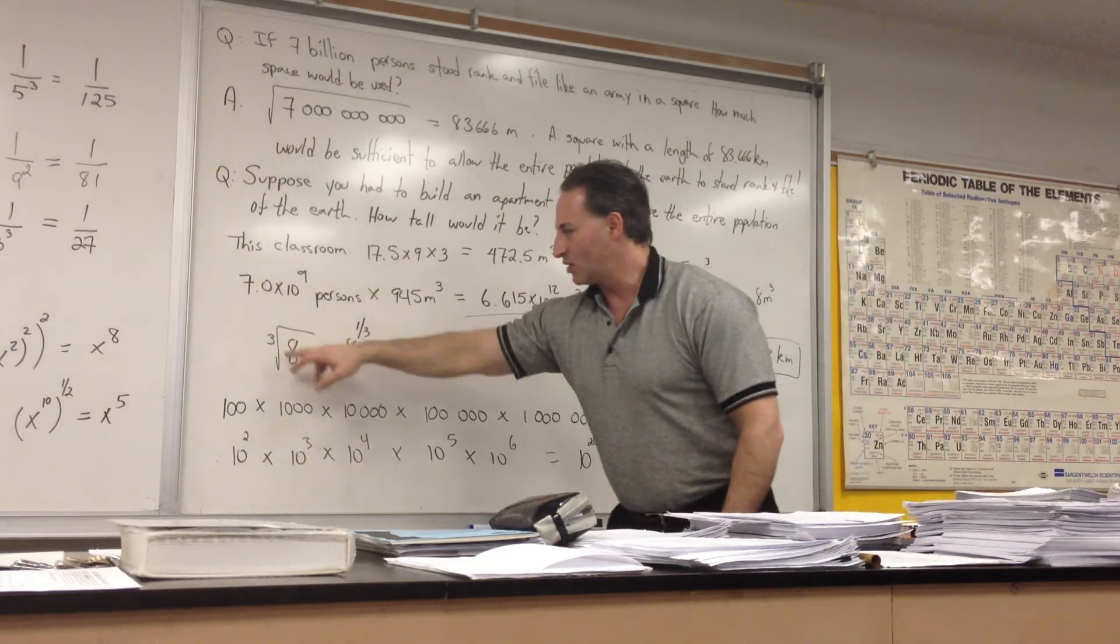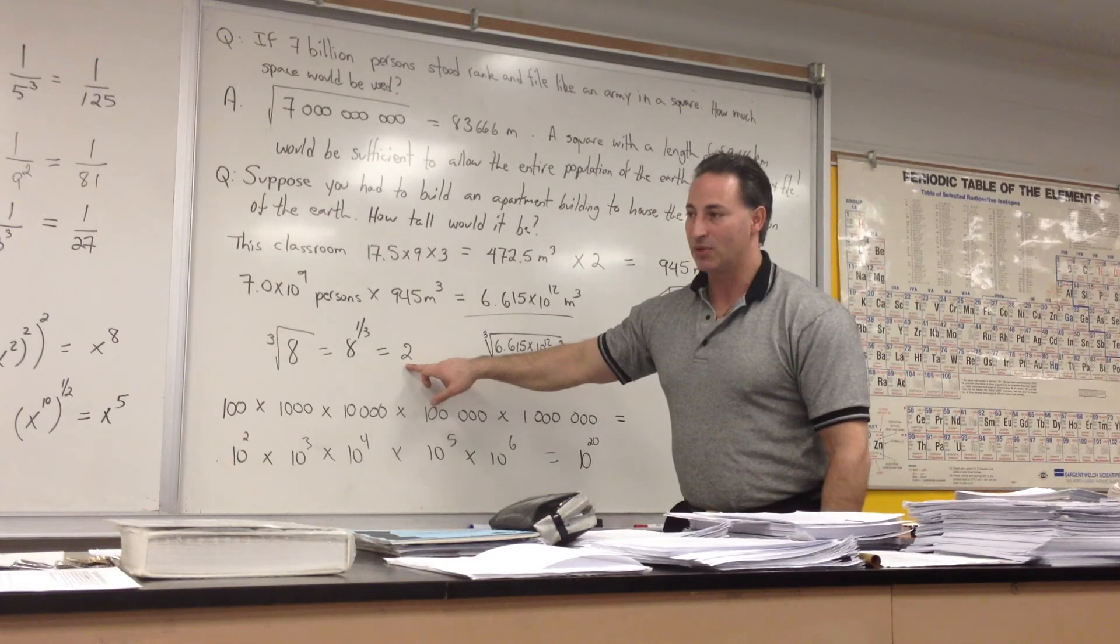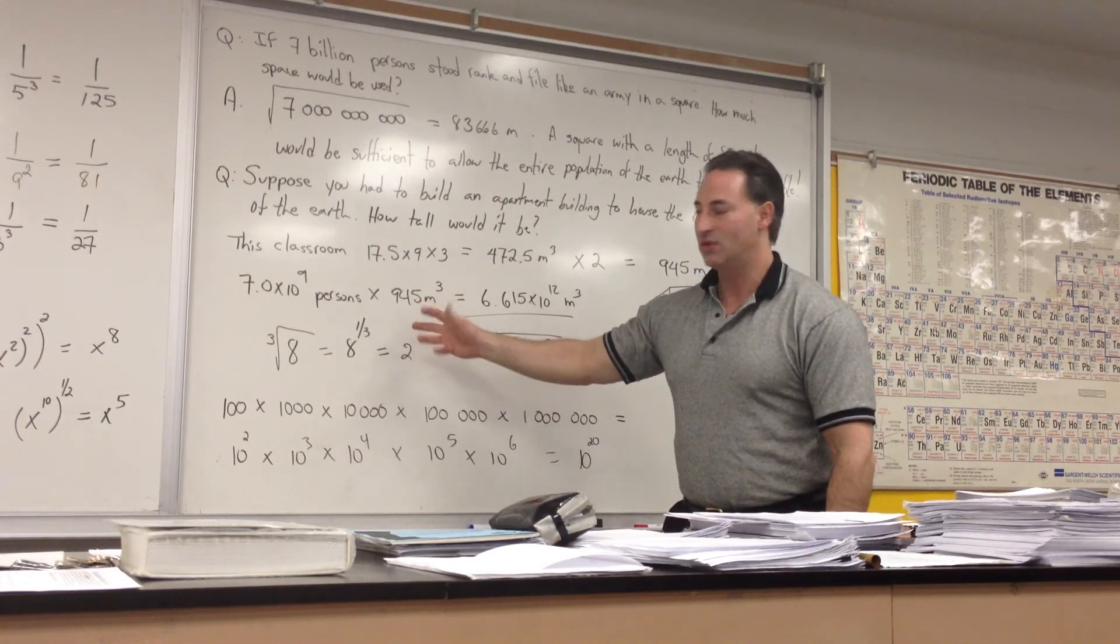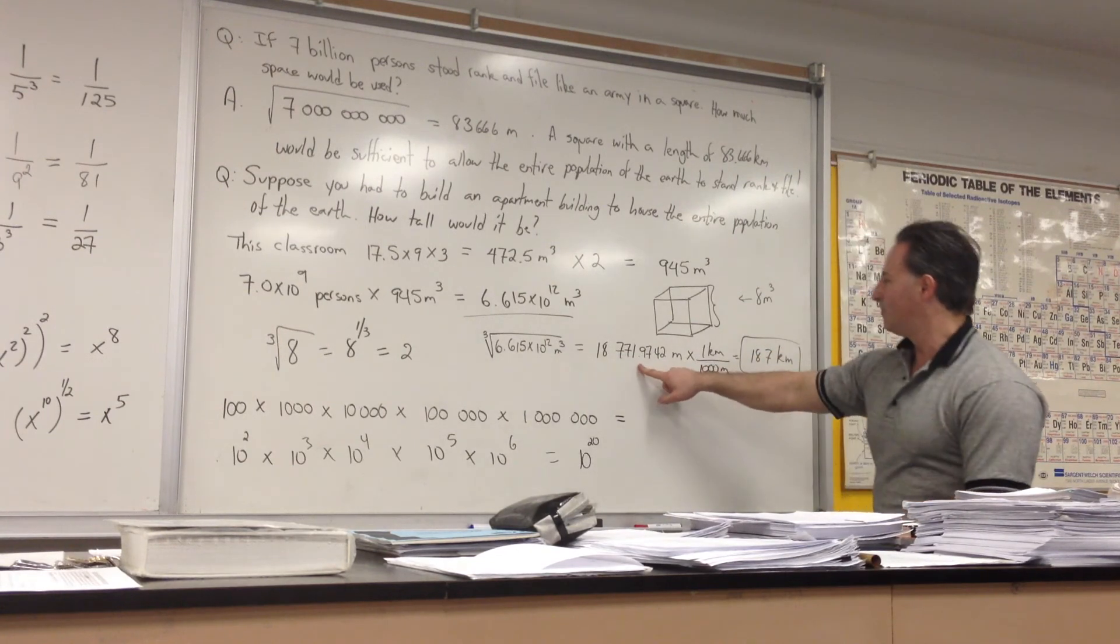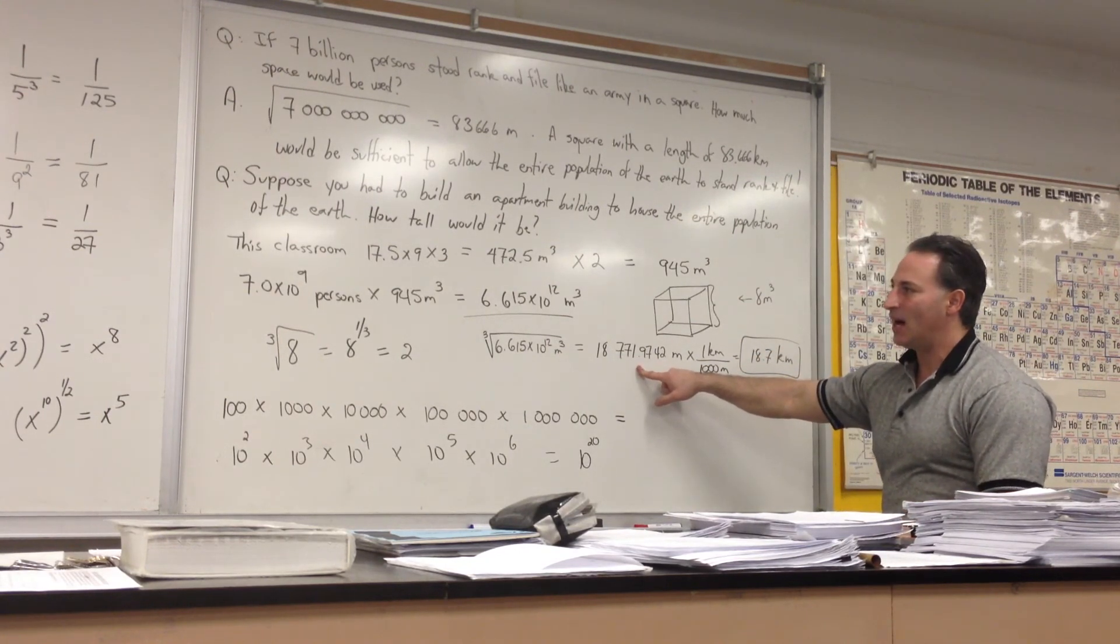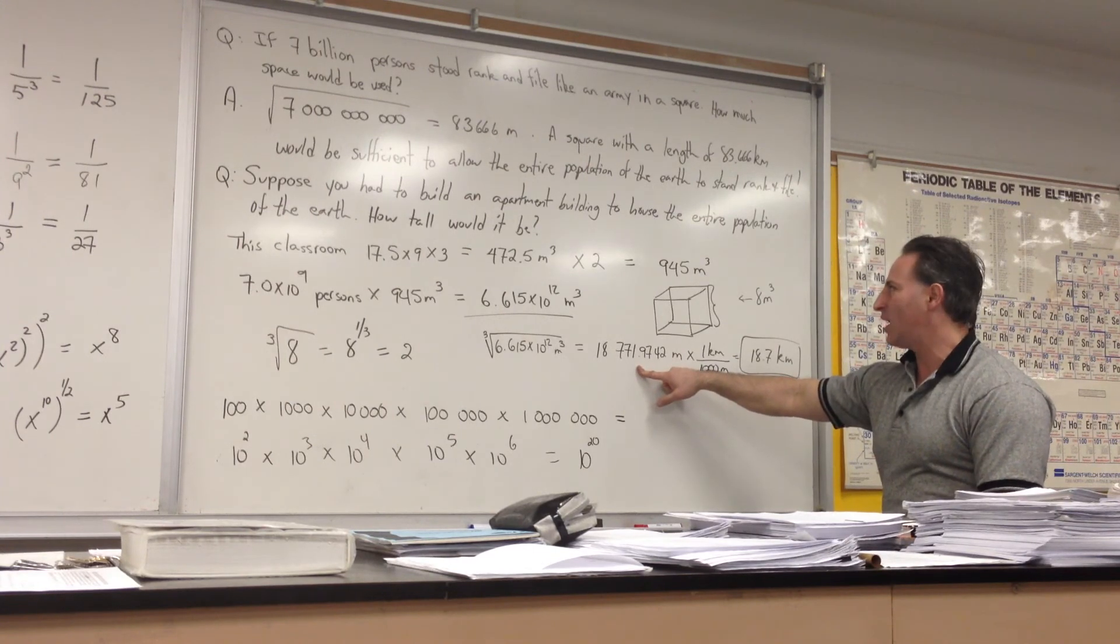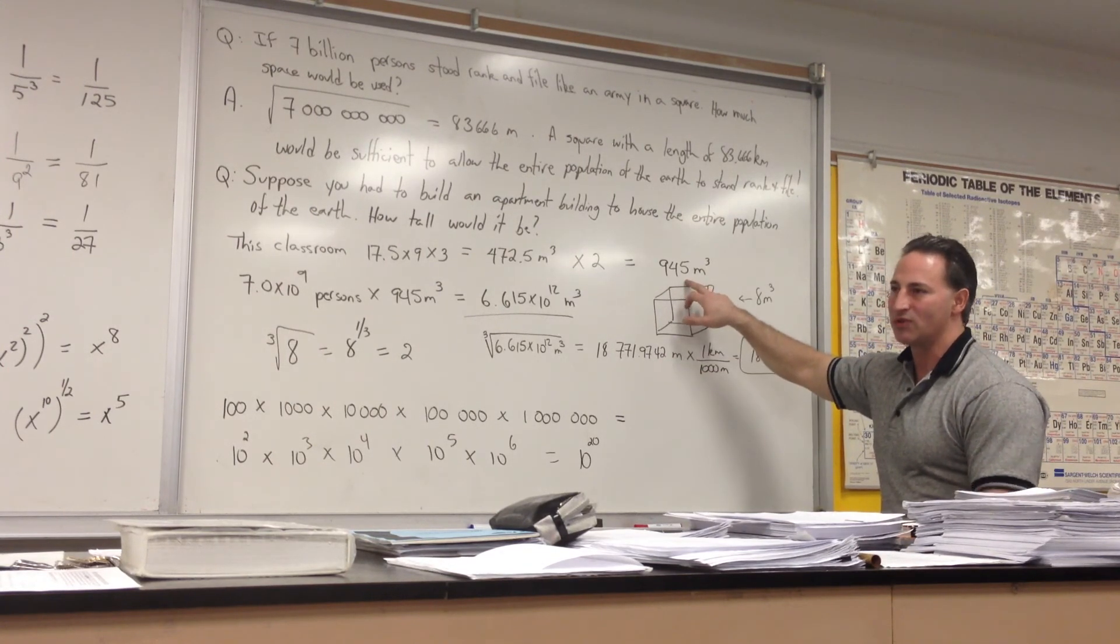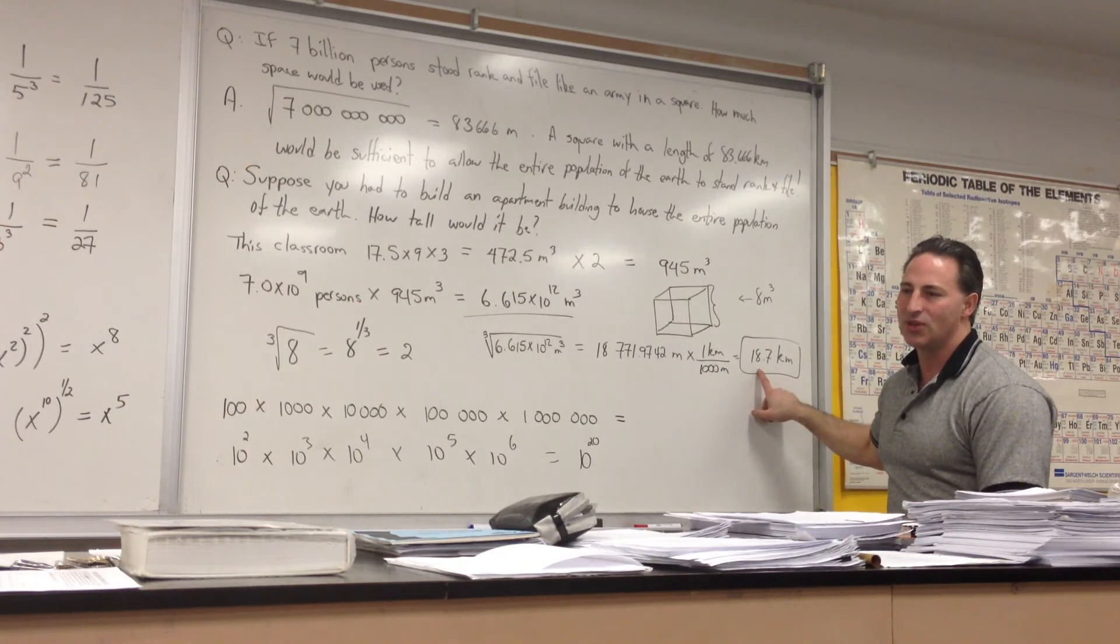So just like if you take the cube root of 8, which is the same as 8 to the 1 third power, it equals the number 2. 2 times 2 times 2 gives you 8. Well, we'll do the same with this number, and we get 18,700 meters. So a building big enough to house the entire population of the Earth with 945 cubic meters for every man, woman, and child would only be 18.7 kilometers tall.